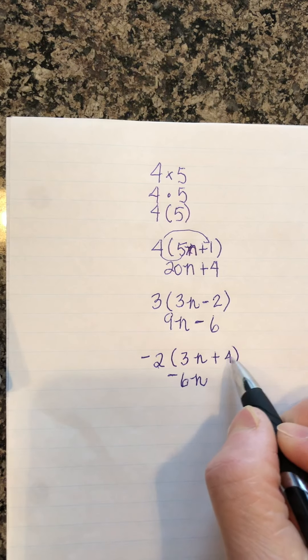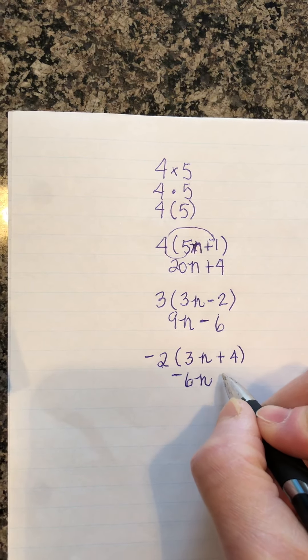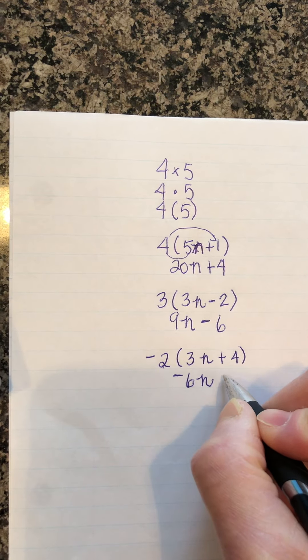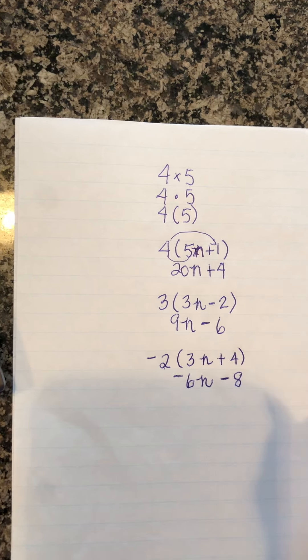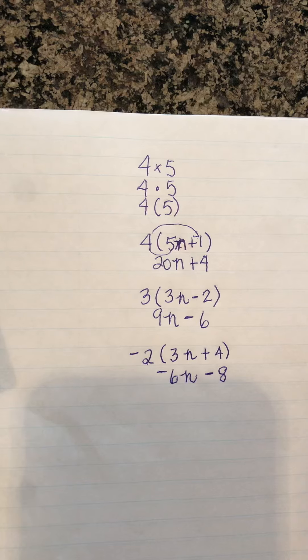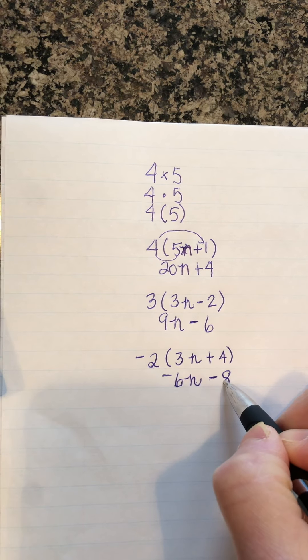And then negative 2 times positive 4 is going to give me negative 8, so minus 8, because minus 8 is the same as negative 8. So negative 6n minus 8.